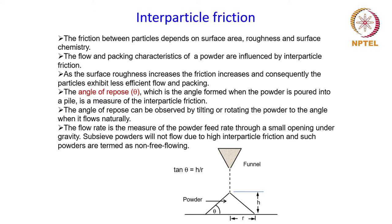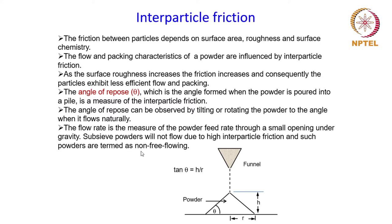If you have very fine powders, they will not flow due to high interparticle friction, and such powders are termed non-free-flowing. If the interparticle friction is high, as is the case for these fine powders, it will prevent the powder from flowing freely. On the other hand, if a powder flows freely out of any container when tilted or passed through a small opening, that powder is known as free-flowing. Non-free-flowing behavior is typical of fine powders or powders with high surface roughness or irregular morphology, which increase interparticle friction.